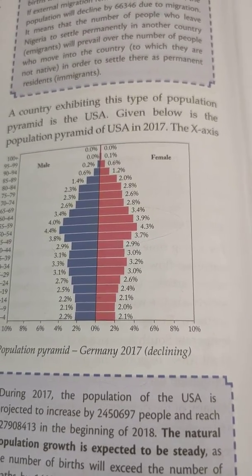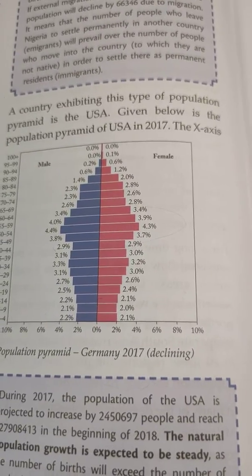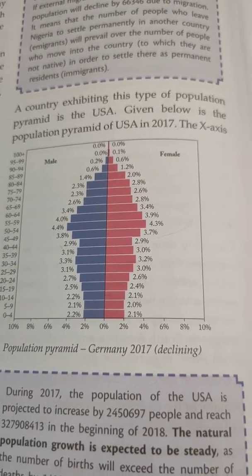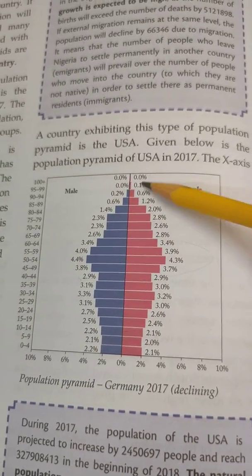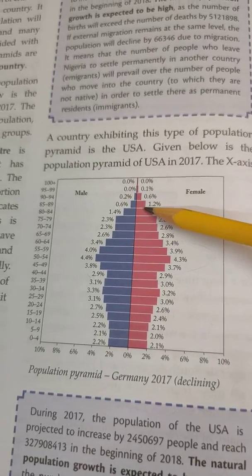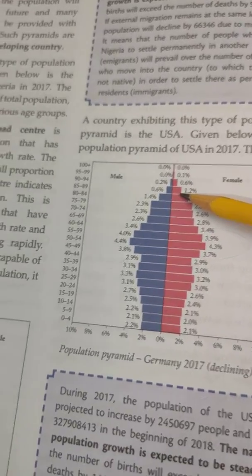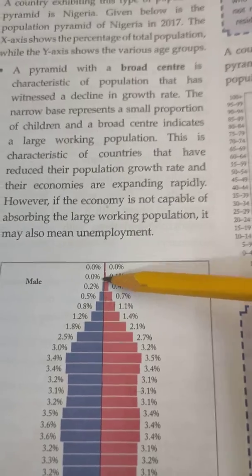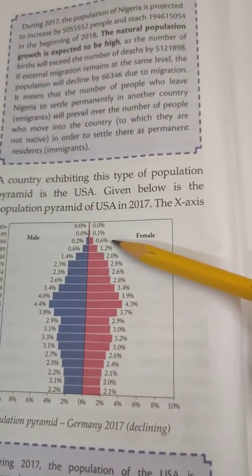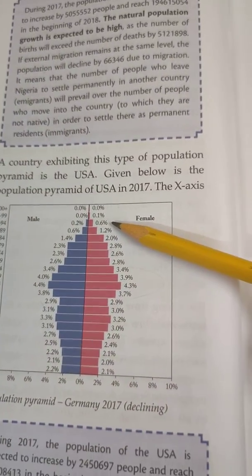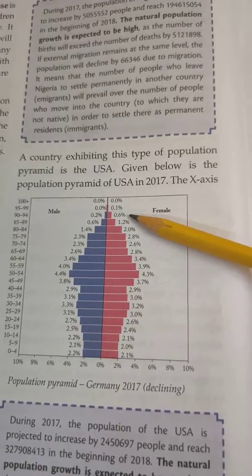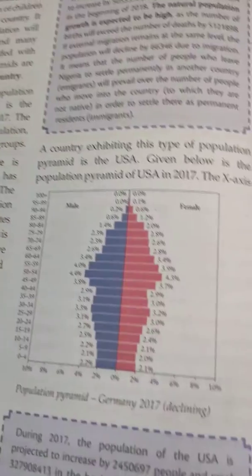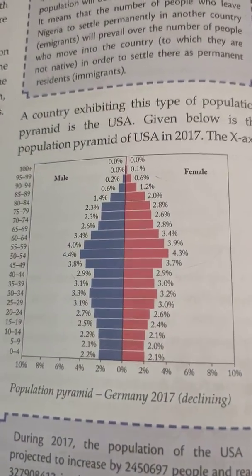When you have a broad peak, it indicates that the aging population is more. When you have a narrow peak, the aging population is less. A broad peak is very dangerous for a country because the working population will become less and the aging population will become more.